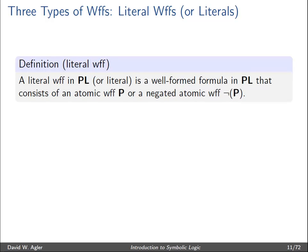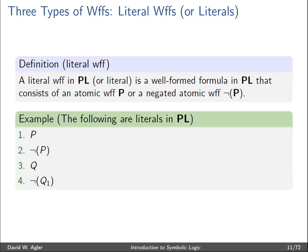The last type of WOOF is a literal WOOF, or more simply a literal — any WOOF that is either an atomic WOOF or a negated atomic WOOF. P by itself is an atomic WOOF, and since a literal is either atomic or a negated atomic, it is also a literal WOOF. In examples 2 and 4, there is the negation of a propositional letter — the negation of an atomic WOOF — so both of those, as well as example 3, are all literal WOOFs.